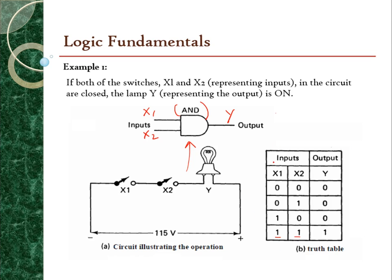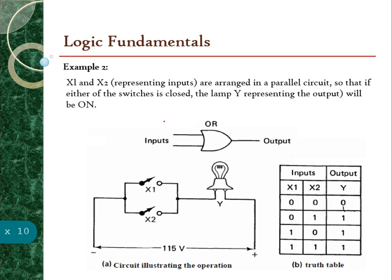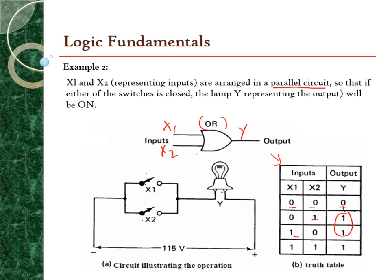In the second example, X1 and X2 representing the inputs are arranged in a parallel circuit, so that if either of the switches is closed, the lamp Y representing the output will be on. Therefore, this is an OR gate because the inputs are arranged in a parallel circuit. You can write down the truth table for the OR gate. This is the circuit illustration of the OR operation and its truth table.